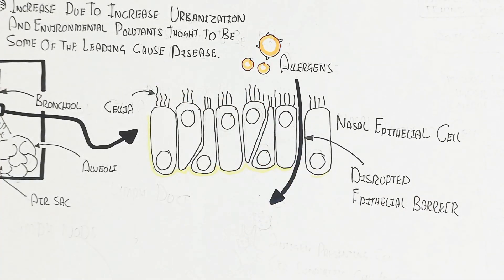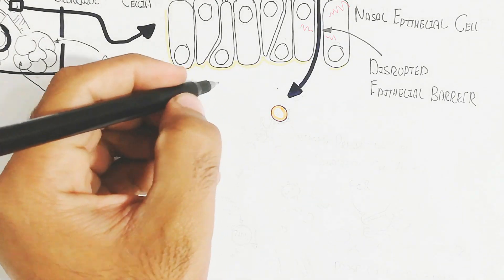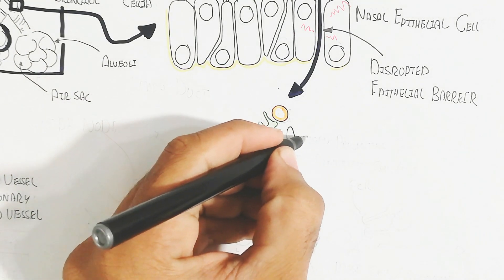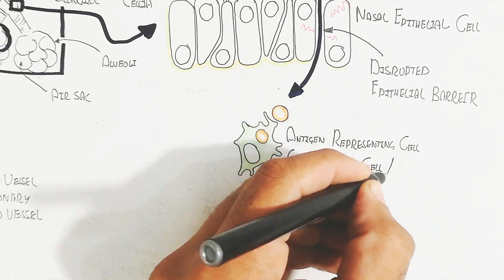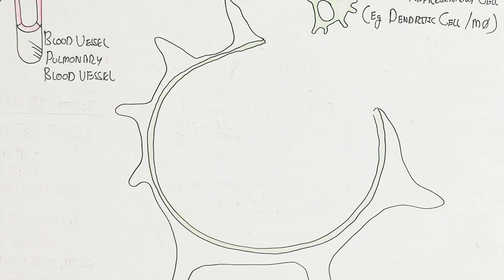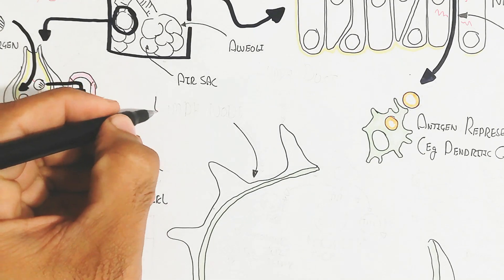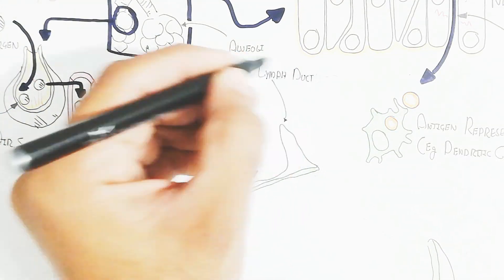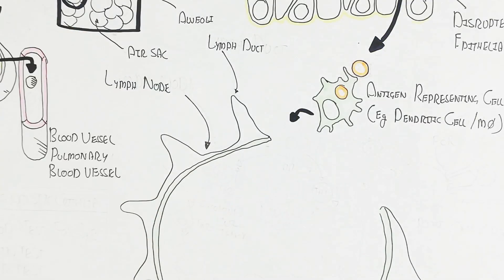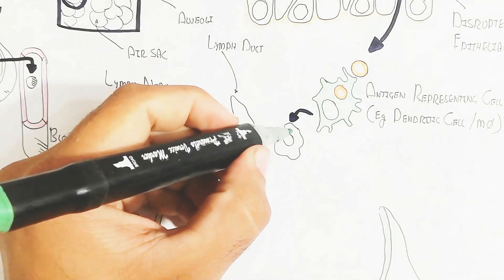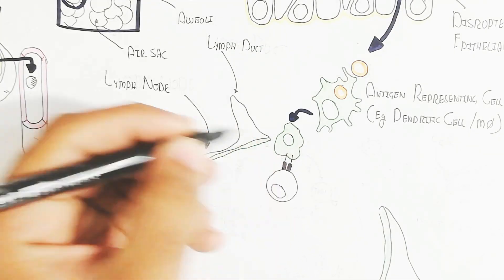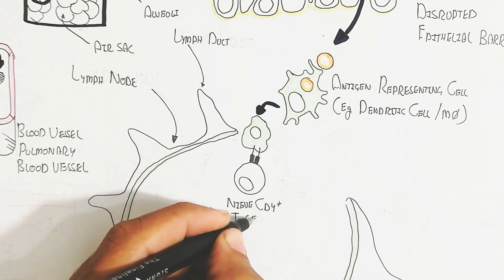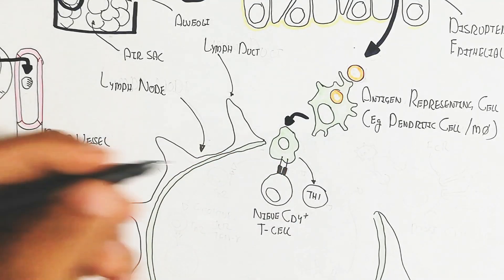Antigen presenting cells, such as dendritic cells or macrophages, recognize these allergens. The dendritic cells then travel into the lymphatic system, specifically the lymph nodes, which contain lymph fluid and leukocytes. In the lymph nodes, naive CD4 T cells are present. Through antigen recognition via MHC molecules on the antigen presenting cells, the naive CD4 T cells recognize, detect, and proliferate into T helper 1 cells to help prevent the allergic reaction.